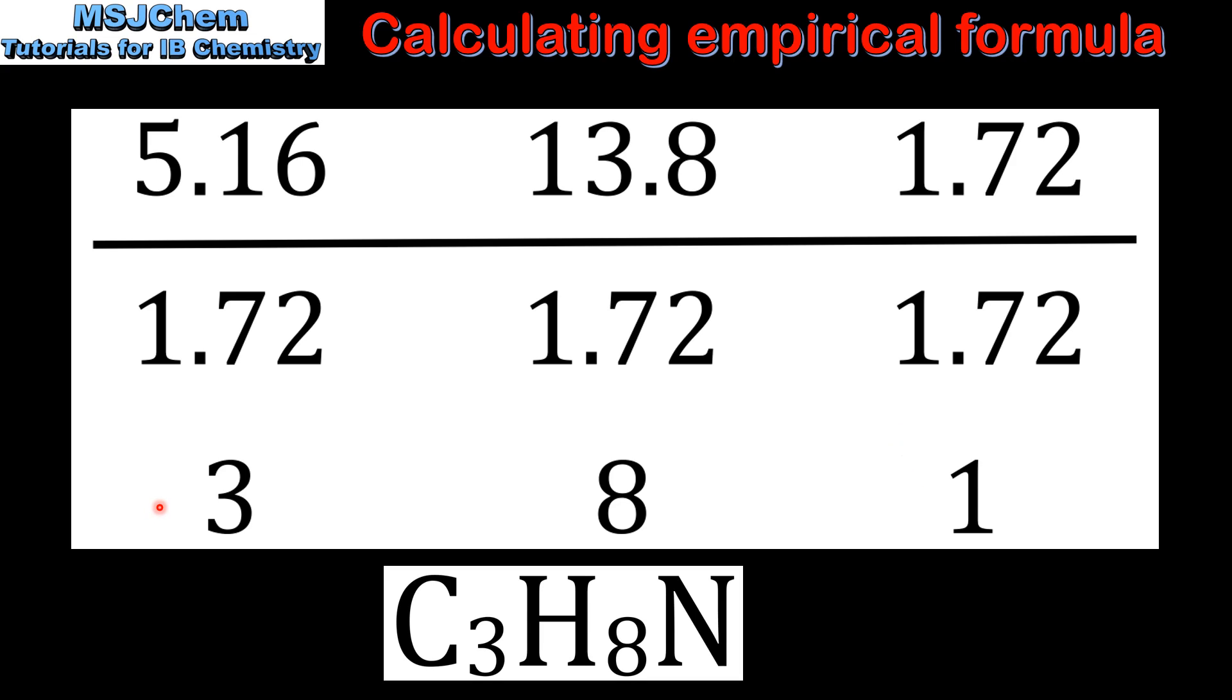We now have the lowest whole number ratio of atoms in the compound. The final step is to write the symbol for the element and the number in subscript. So the empirical formula for organic compound A is C3H8N.